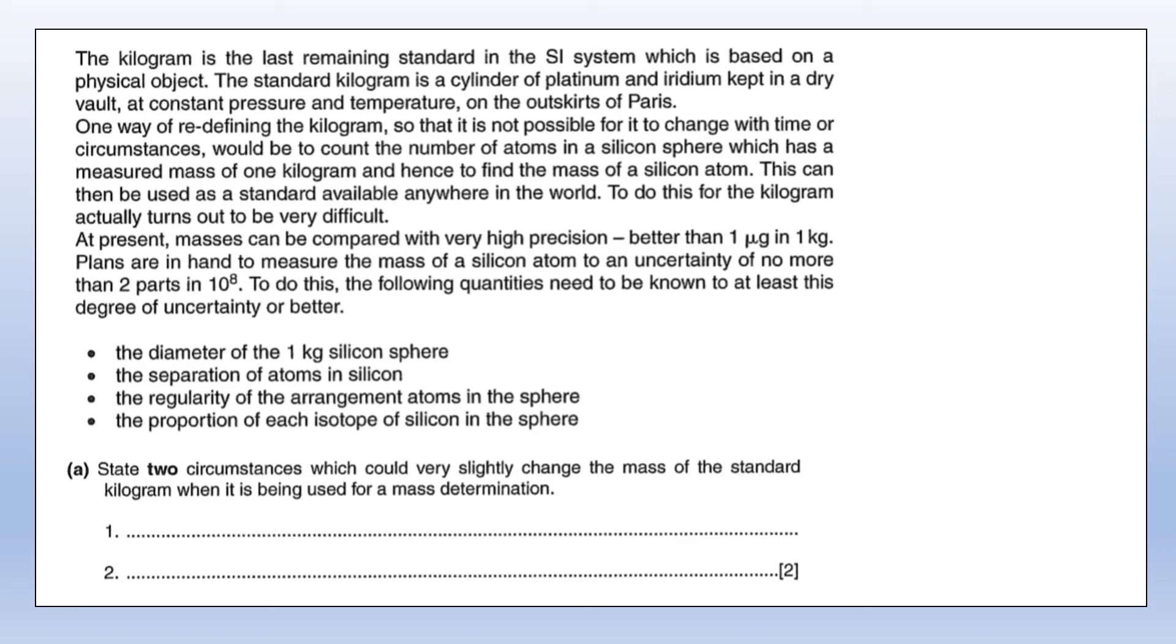First, what two circumstances could slightly change the mass of the standard kilogram when it's being used for a mass determination? One thing is that silicon is reasonably reactive, so it can react with gas in the atmosphere and form silicon oxide or silicon dioxide, which would have a different mass. The other thing is, if you're going through some measurements you might damage your silicon, dent it, crack it, and change its mass slightly. Given the precision of the measurements, that's going to have quite an effect.